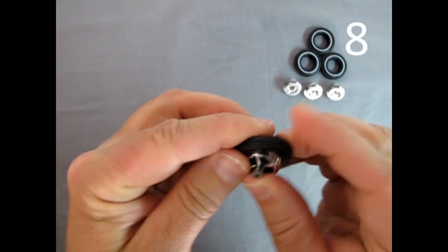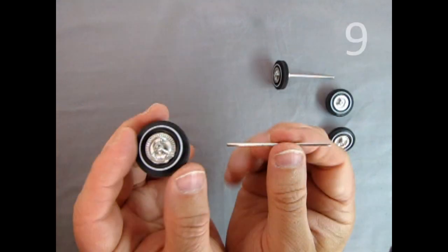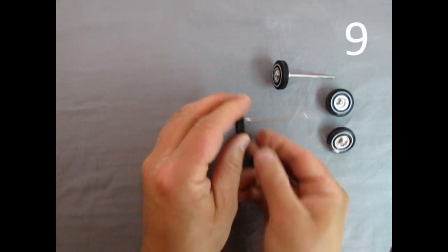Insert the chrome wheels into the white wall tires. Stick the metal axle into two of the wheels.